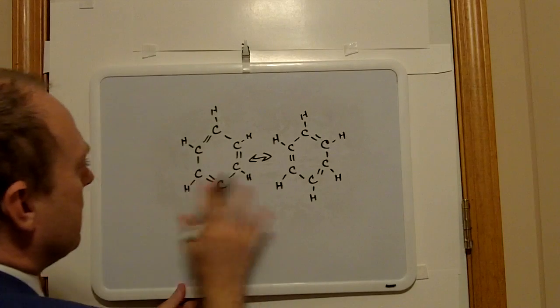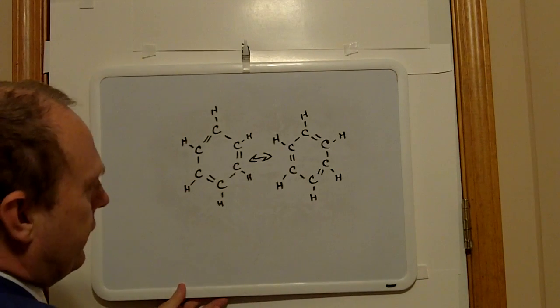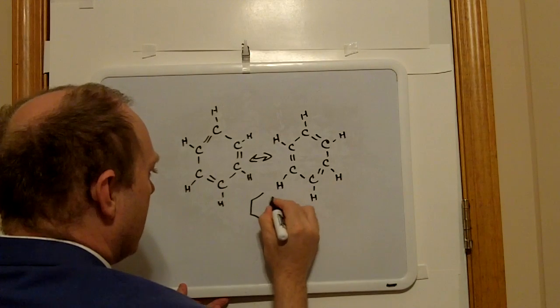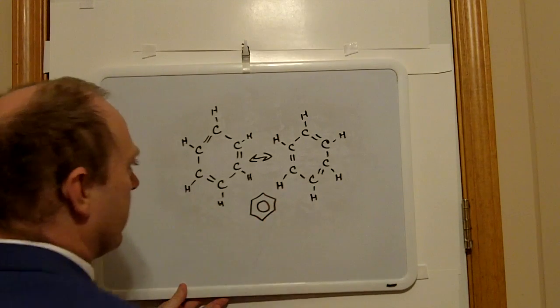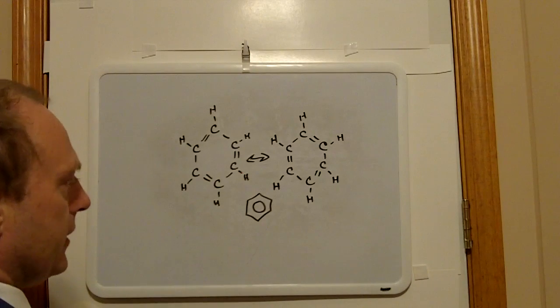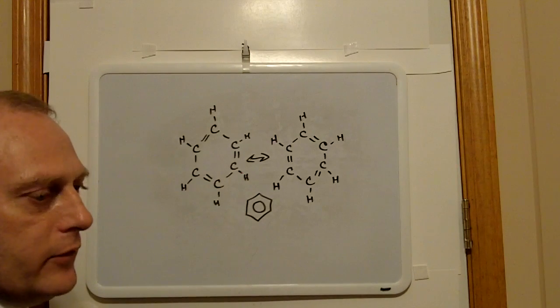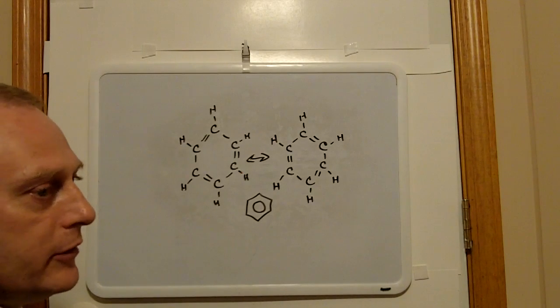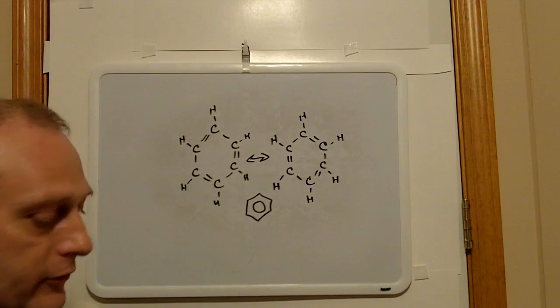What they did to rationalize their observations was to come up with this convention of a hexagon with a circle inside, which isn't contained within the arcane of Lewis single, double, and triple bonds, and is not consistent use of symbolism in the rendering of this molecule.